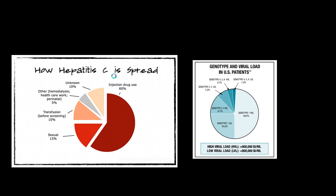Hepatitis C is spread by numerous different ways, usually blood to blood. The most common is injected drug use, but sexual contact, usually again through exposed skin and blood, transfusion before screening — this is usually in the late 80s before 1992 — and other exposure such as healthcare workers. The majority of hepatitis C is type 1 genotype, but the other genotypes can also be found.